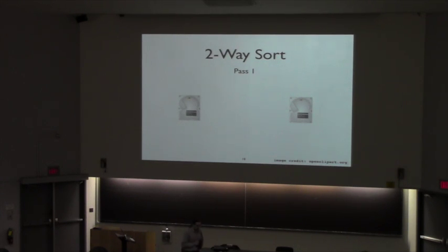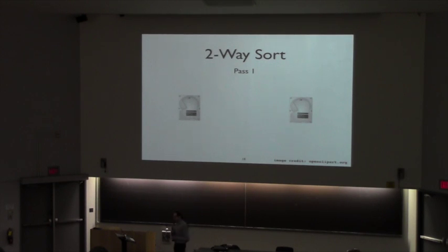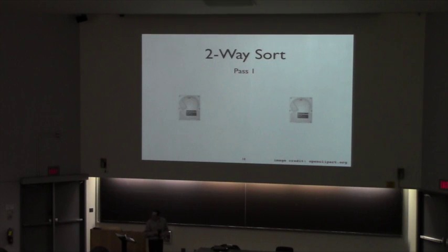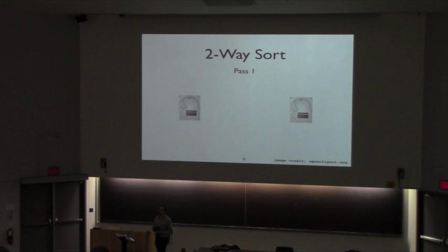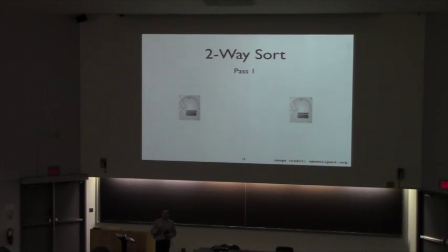This is a multi-pass algorithm that touches all data values multiple times. Assumptions: data is loaded in page granularity, and multiple records fit per page. This algorithm — two-way external merge sort — operates in two phases. The first phase handles pass one; the second phase handles all subsequent passes. The working set size of merge sort is what? Think about that. In the first phase, you load one page at a time, sort just that one page, and sync it back to disk. Working set size: one page.